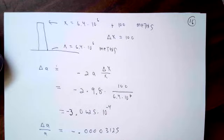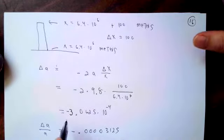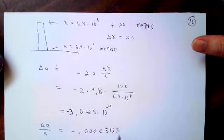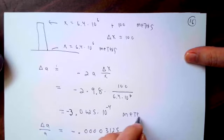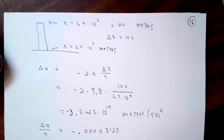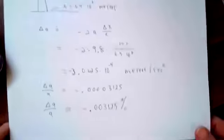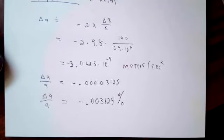After you do the calculation, you'll find that the change in the acceleration due to gravity is negative 3.065 times 10 to the negative 4, and naturally that'll be in meters per second squared. If you want to get kind of a relative feel for how big this is, take the quantity, the delta A, and divide it by A itself, which is 9.8 meters per second squared, and express this as a percentage. You'll find that vertically changing your position by 100 meters changes the acceleration due to gravity by negative 0.003 percent. You would have to have extremely accurate measuring equipment to even detect that.